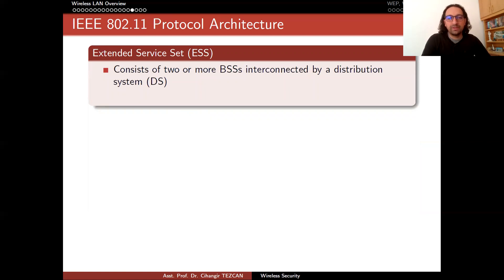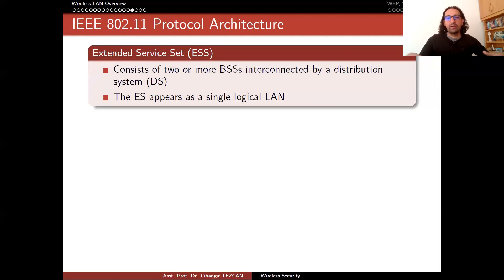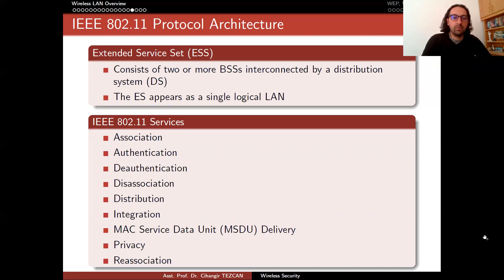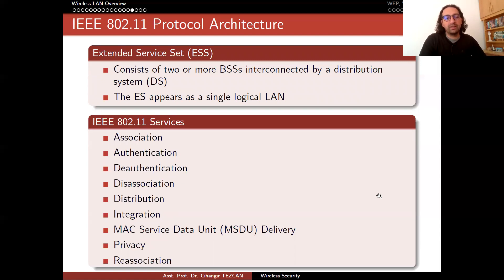The extended service set (ESS) consists of two or more basic service sets interconnected by a distribution system (DS). At a university, you have more than one BSS, but the ESS appears as a single logical local area network. The services provided by this standard include: association, authentication, deauthentication, disassociation, distribution, integration, MAC service data unit (MSDU) delivery, privacy, and reassociation.